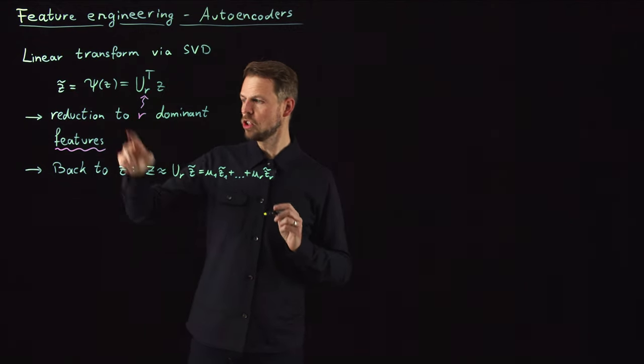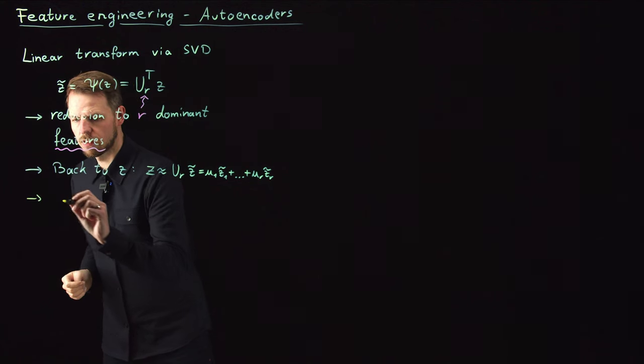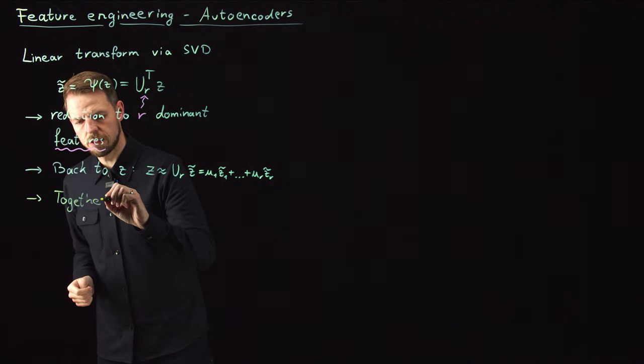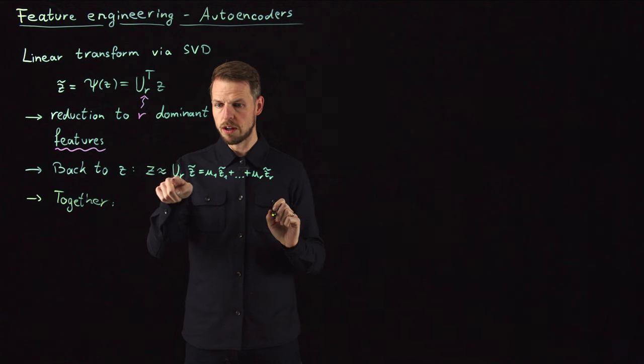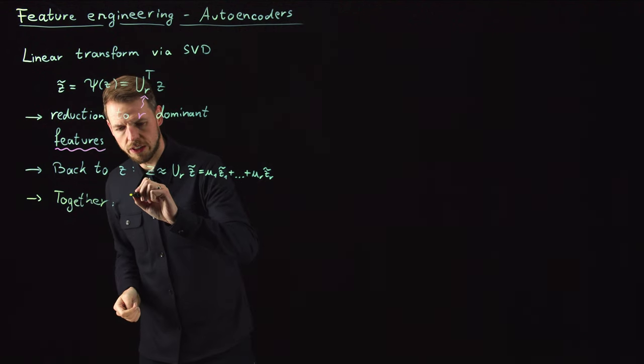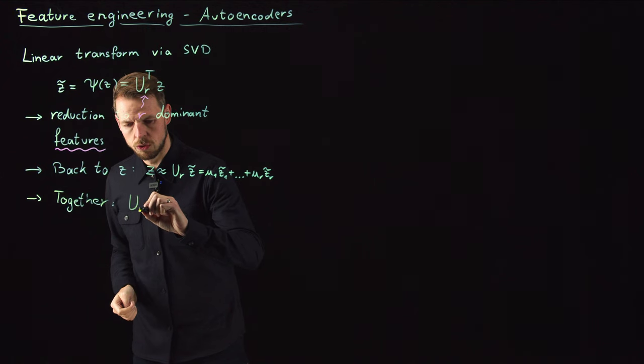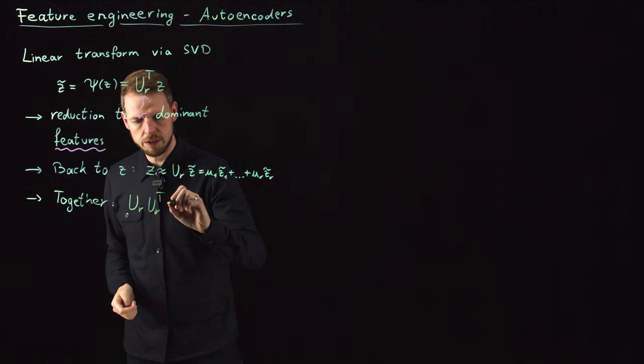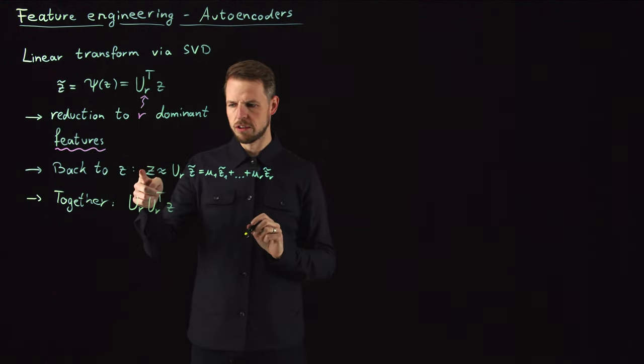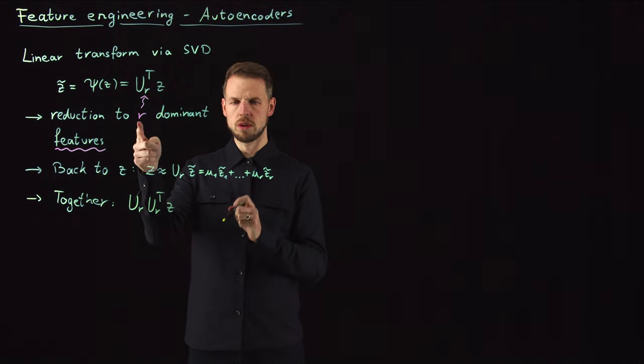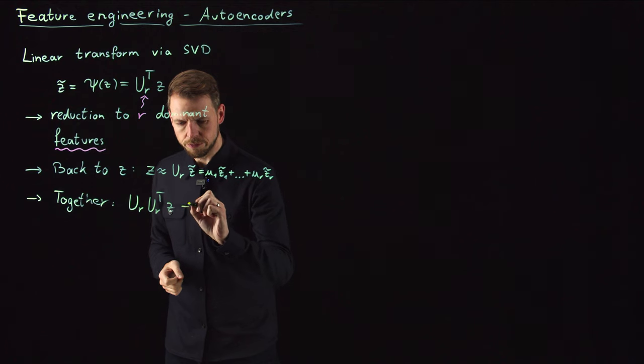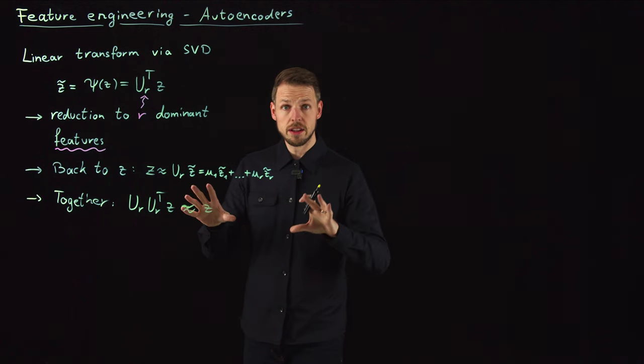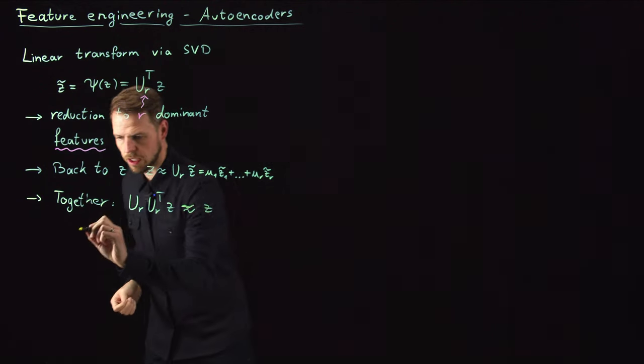Let's take a look at the composition of these two. What happens if we just consider both steps together? It's very easy to see that you apply UR to Z tilde, which is this matrix vector product. So what we get is UR times Z tilde, which is UR transposed Z. This takes us back to the original space. But now, obviously, it's not exact because we only took a subset of features. So this is approximately the Z term. Now let's take a look at the visual version of this.